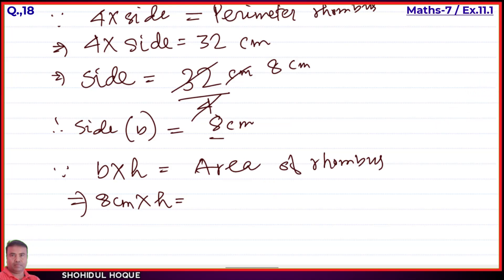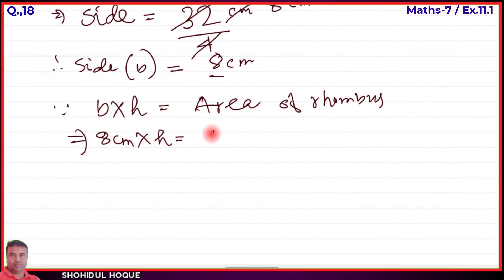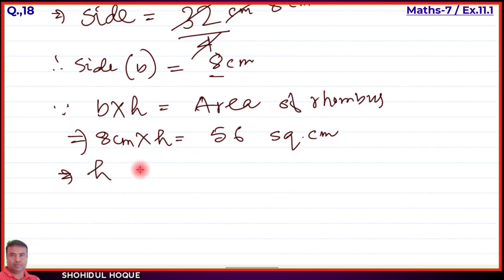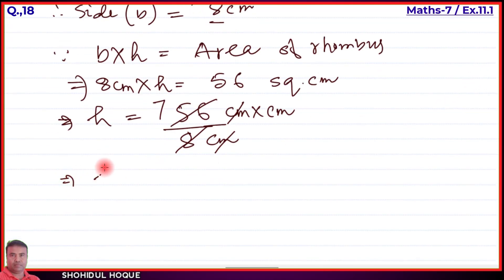Since Area of rhombus = base × height, we have: 8 centimeters × height = 56 square centimeters. Transposing 8 centimeters to the right side: height = 56 ÷ 8. Centimeter cancels with centimeter leaving centimeters. 7 × 8 = 56, so height = 7 centimeters. Therefore height equals 7 centimeters.